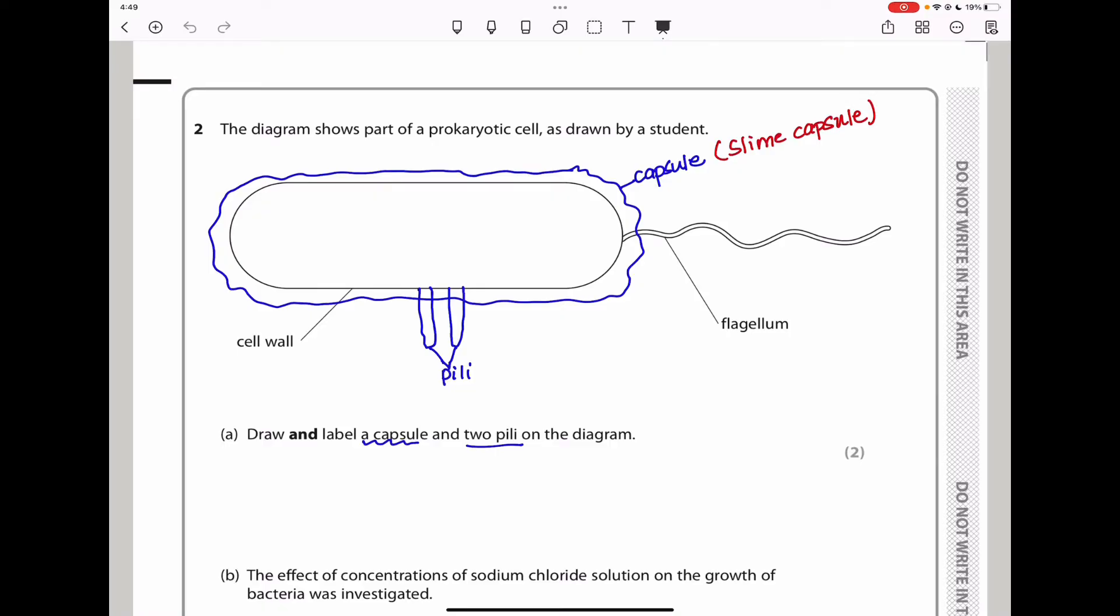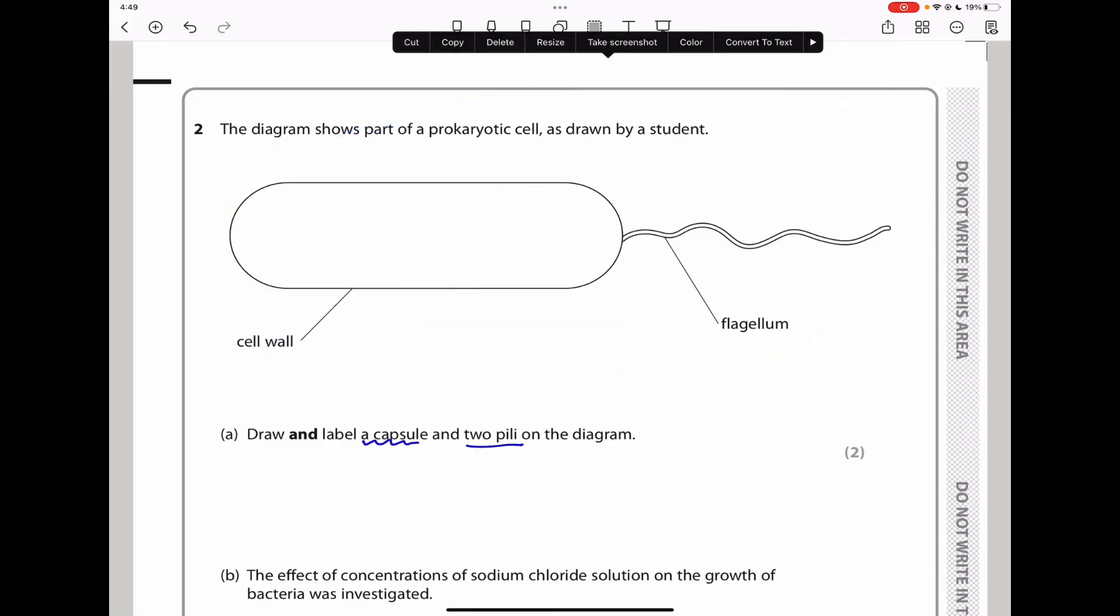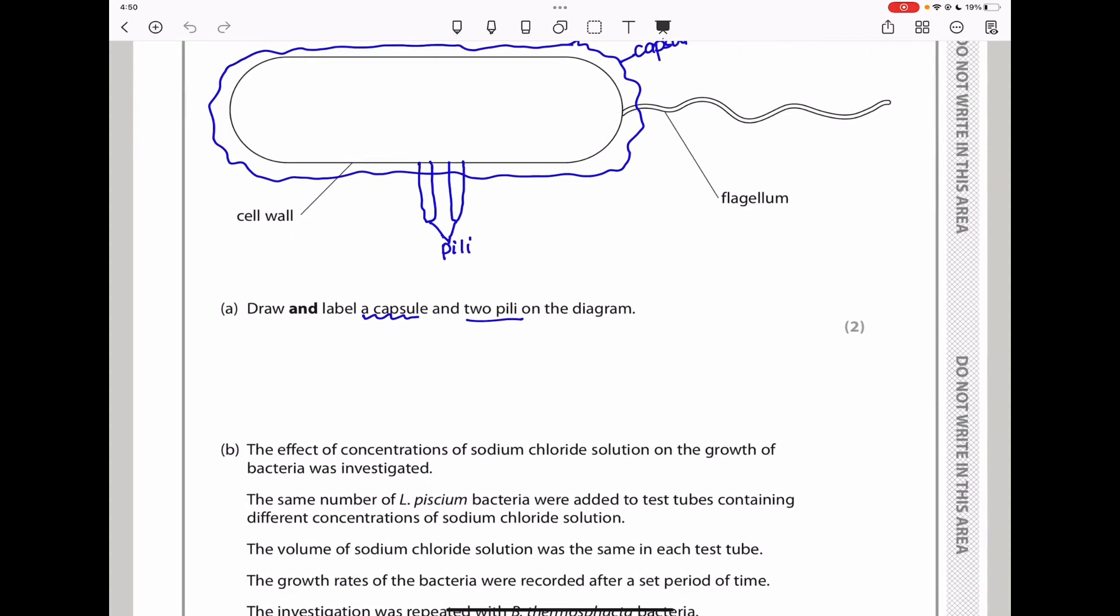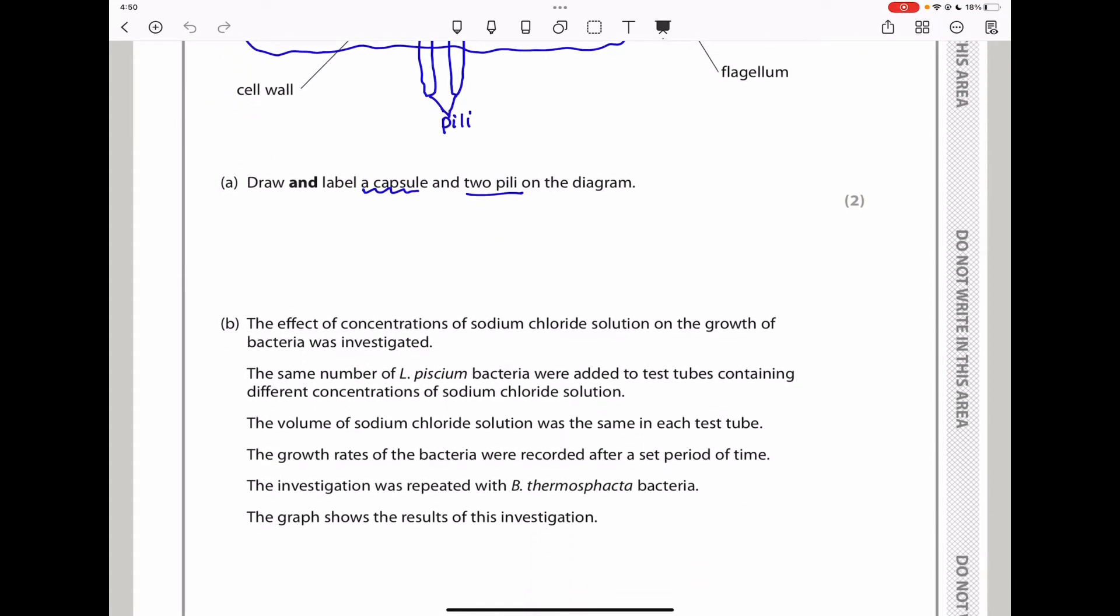Question 2 says the diagram shows part of a prokaryotic cell as drawn by a student. I'm going to delete what I drew here so I can show you how this question was before I wrote anything. They labeled the cell wall and the flagellum, and asked you to draw and label a capsule and two pili on the diagram. The capsule is a slime capsule around the enclosure, and the two pili are here.